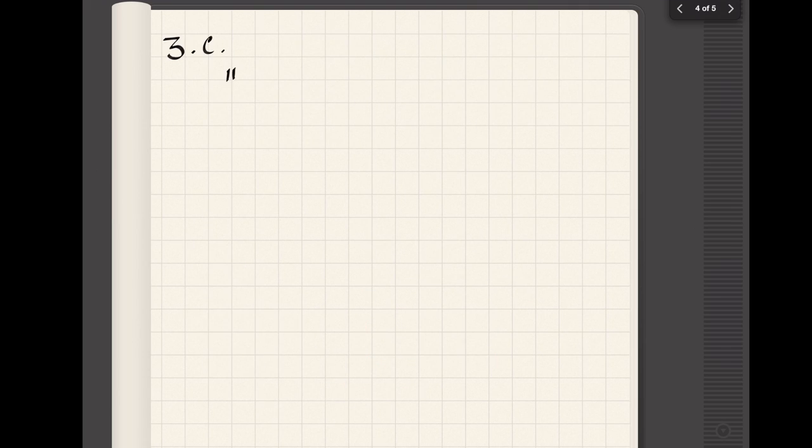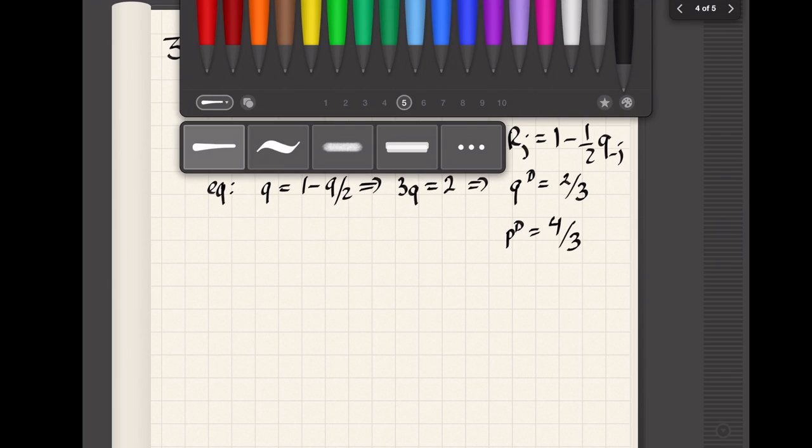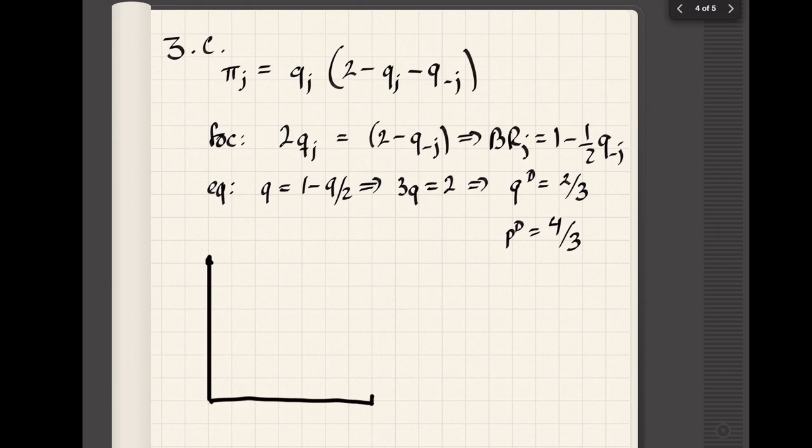For the Cournot duopoly, we do something similar. We write the profit function, we take first order conditions, but now instead of getting the answer we just get the best response. In order to get the equilibrium quantity, we actually have to solve for the equilibrium by setting q equal to its own best response, which gives us a quantity of two thirds. In the inverse demand that would give us a price of four thirds, but then when I started drawing my graph I realized that's a mistake because two thirds is the quantity that each firm is producing.